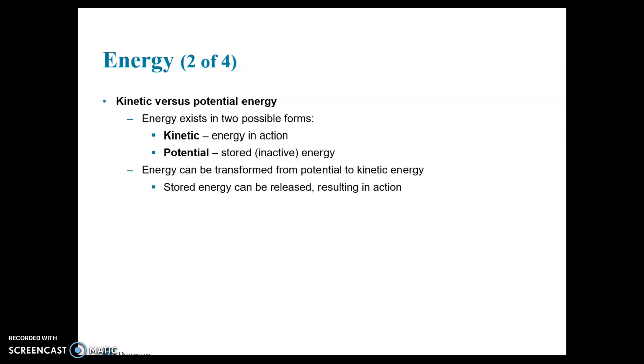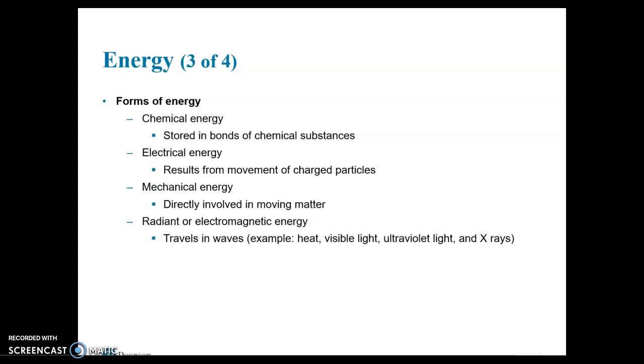There are two types, kinetic and potential. Kinetic is energy and action or motion. And potential is stored energy. In chemicals, the potential energy is stored in chemical bonds. So chemical energy is stored in bonds. The potential energy of like glucose, for example, that gets broken down for energy by our cells, that potential energy is stored in the chemical bonds between the carbon, hydrogen, and oxygen atoms of glucose. Electrical energy results from movement of charged particles.